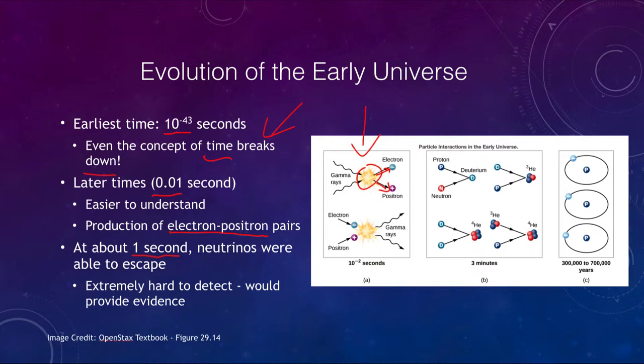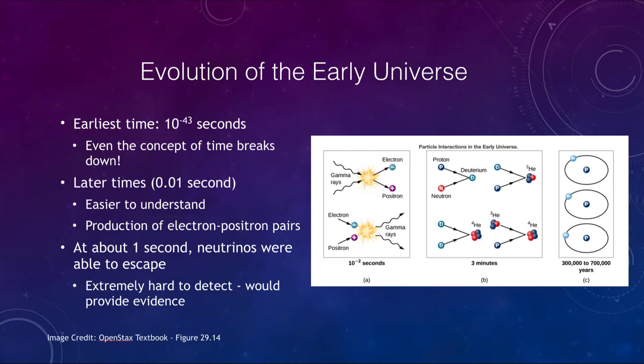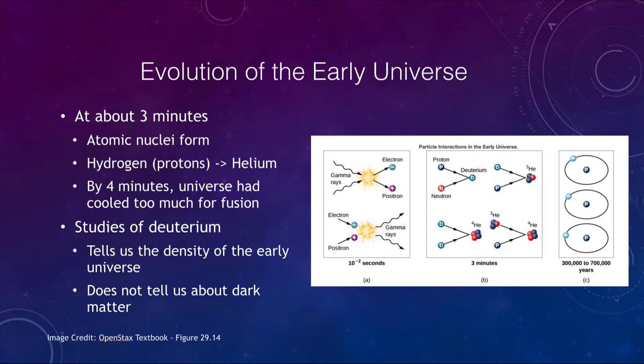About one second into this, neutrinos were able to escape — we're finally getting to the point where the universe is low enough in density that neutrinos could escape. Neutrinos can travel through just about anything, but before one second the universe was so dense that even neutrinos were trapped and unable to escape. They would be extremely hard to detect but would give us evidence of the very early history of the universe.